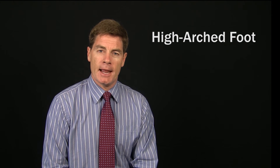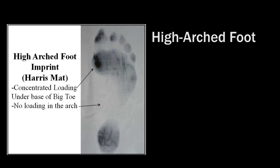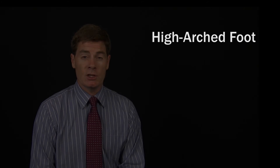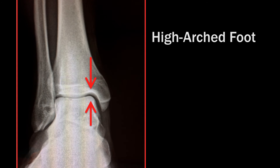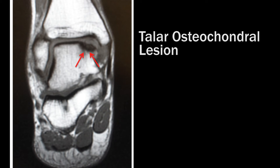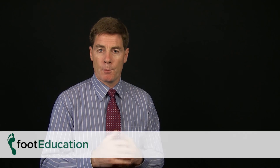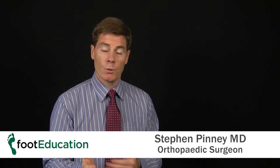There tends to be more compression over the base of the first metatarsal because that area is really quite rigid, so you tend to get conditions like sesamoiditis. In addition, the inside part of the ankle joint tends to be increasingly loaded with compressive forces, so talar osteochondral lesions are often seen on the medial aspect of the ankle in someone with a high arched foot.